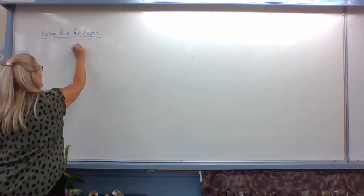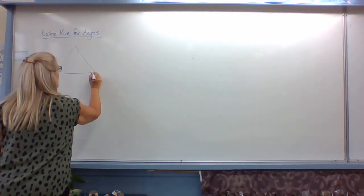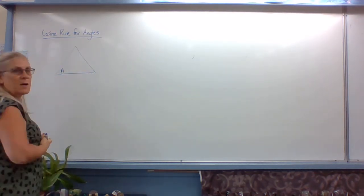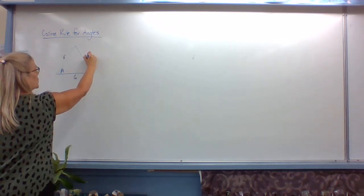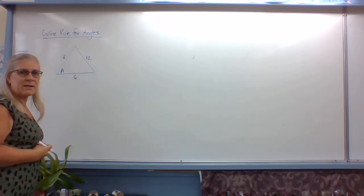So the triangle, we're going to have A missing, but have the other three sides there. So 6, 8, 12, something like that.